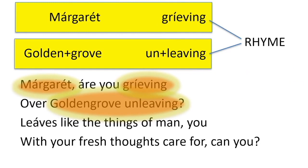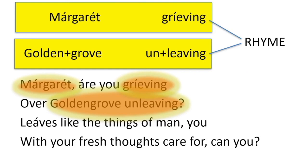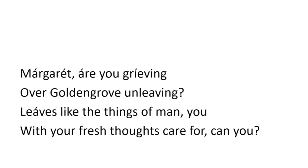And then there's the rhyme scheme. 'Margaret, grieving' and 'golden grove, unleaving' — a two-syllable, or as it's sometimes called, feminine rhyme. And of course all of this is framed as a question: are you grieving because the leaves are falling? Can you care about such a thing? And then he goes on to answer his own question.